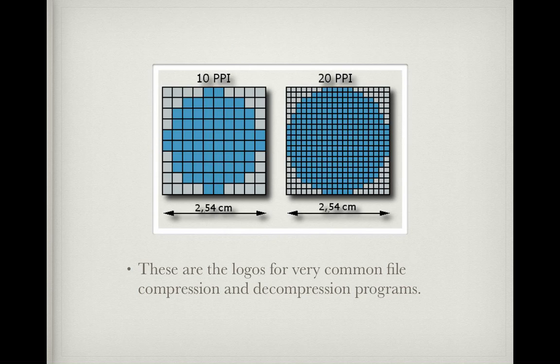This is a very simple photo showing the effect of PPI on photos. As you can see, they're both the same size physically, but the image with the greater PPI is higher quality and has more pixels that can be seen in it.